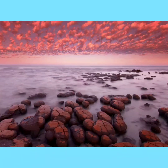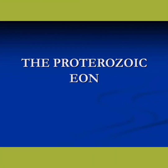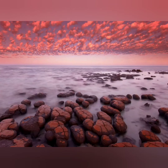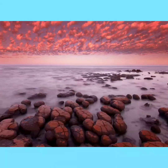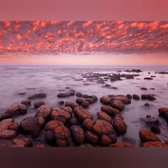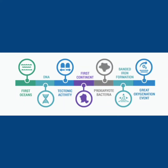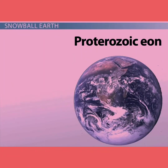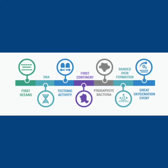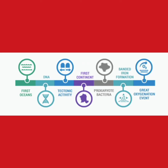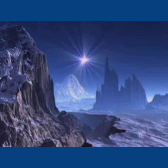The Proterozoic Eon extended from 2,500 million years to 542 million years ago. The name Proterozoic comes from Greek, meaning 'earlier life.' The well-identified events of this Eon were the transition to an oxygenated atmosphere, several glaciations, and the evolution of abundant soft-bodied multicellular organisms. In this Eon, the temperature cooled down significantly compared to the Archean Eon, and Earth completely froze into a snowball Earth or slushball Earth.